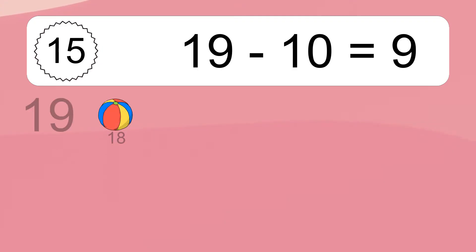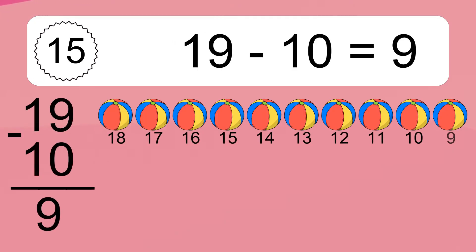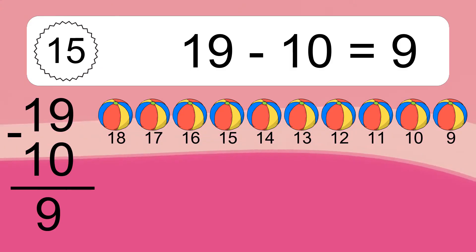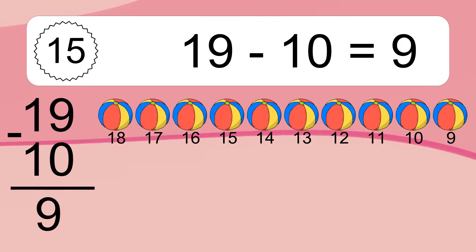19 minus 10 equals 9. Let's count it! 18, 17, 16, 15, 14, 13, 12, 11, 10, 9.